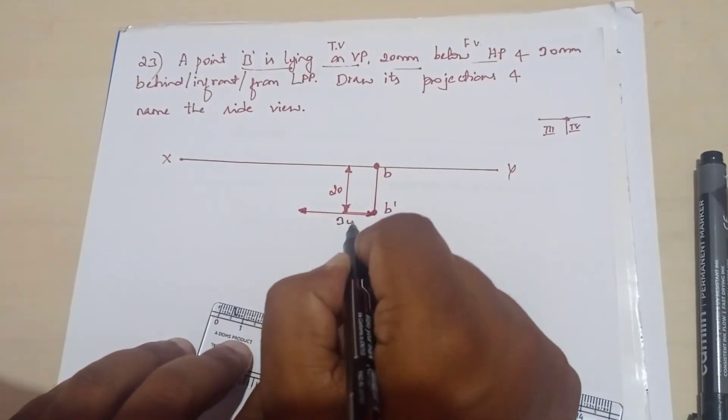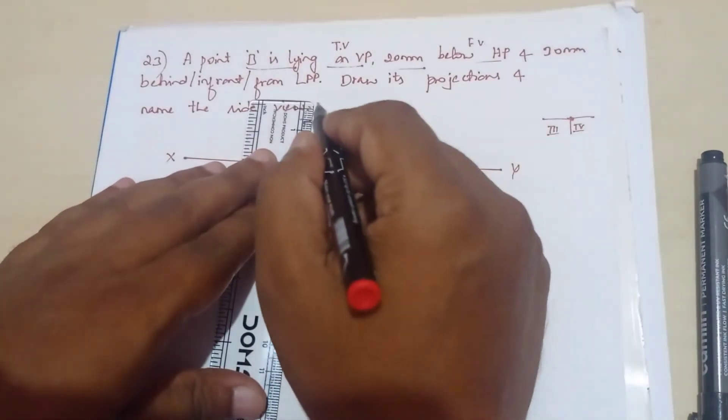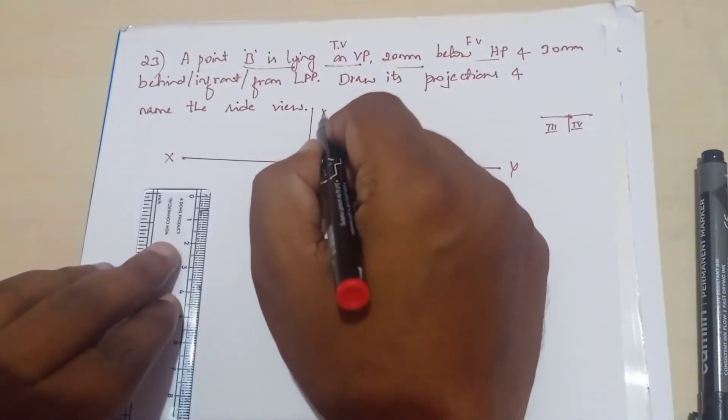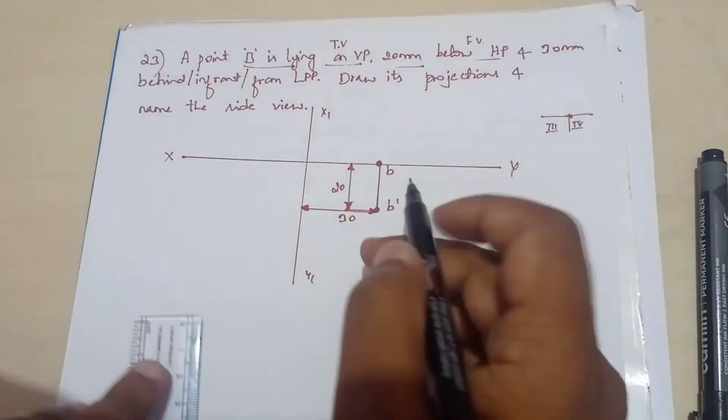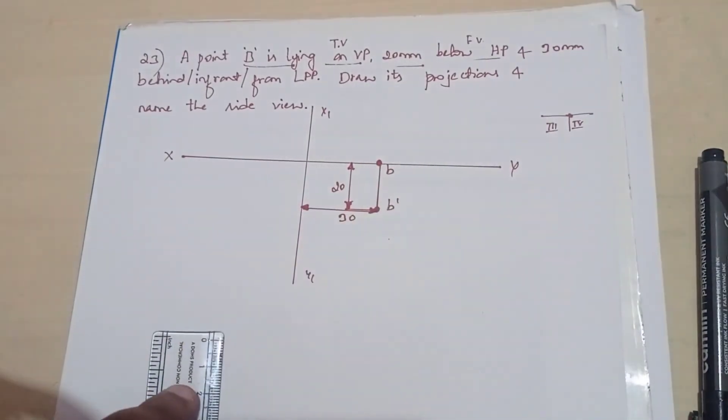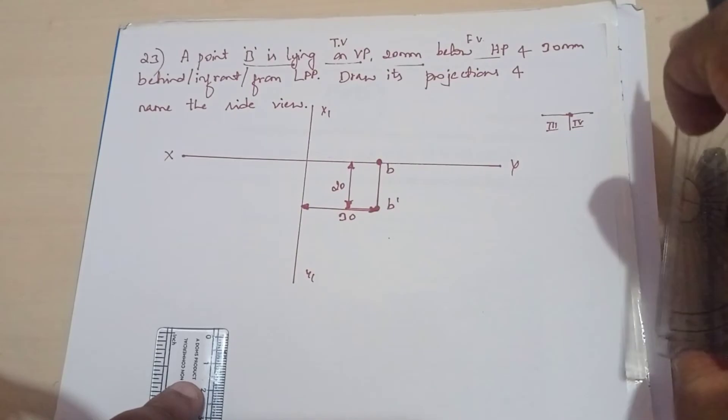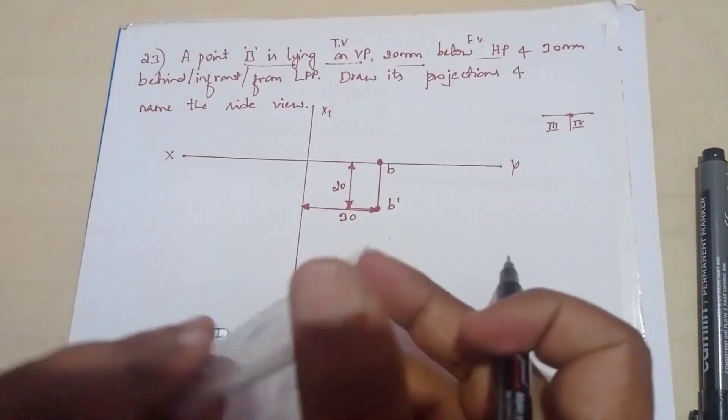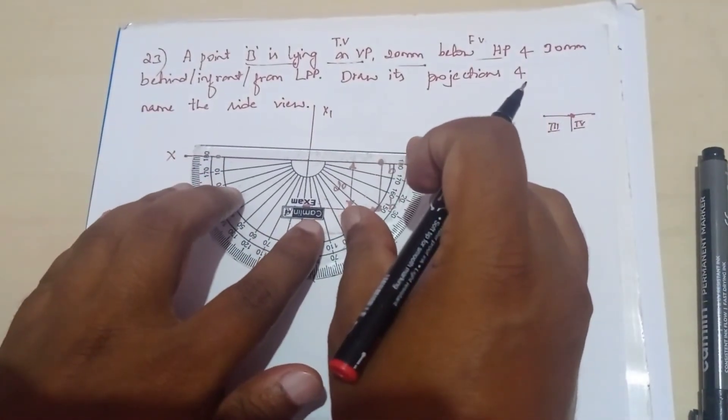Now here you can draw X1Y1 line. And here the top - you can see here it is lying downward, so the angle line should be drawn below the XY line at the intersection of XY and X1Y1. So mark for 45 degree angle.